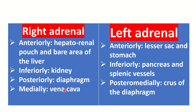Now let's look at the anatomical relations of the adrenal gland. The right adrenal gland is related anteriorly to the hepatorenal pouch and bare area of the liver, and inferiorly to the kidney. Posteriorly it relates to the diaphragm. The most important relation of the right adrenal gland is medial — the inferior vena cava — because during surgery on the right adrenal gland, the inferior vena cava may be injured.